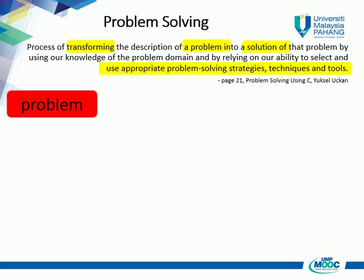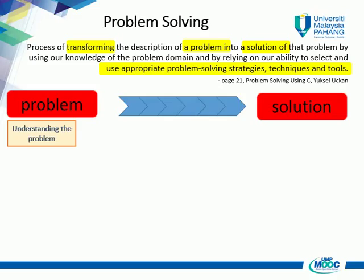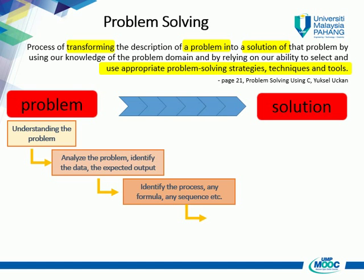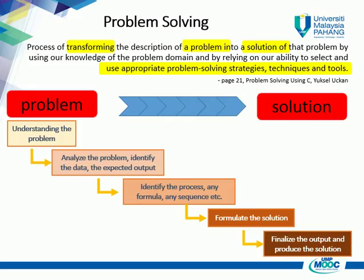The word problem and solution — we need something to link between problem and solution. First, we need to understand the problem in as much detail as we can. Then, analyze the problem by identifying the data or any related input and also the expected output. Next, identify the processes that may involve the formula, sequences, or both. After that, combine the input with the process and formulate the solution. Finally, finalize the output and produce the total solution.